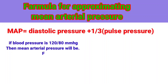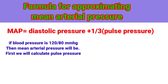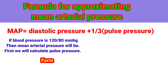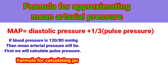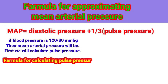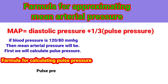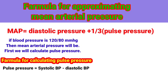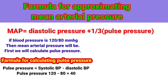then we will first calculate pulse pressure. The formula for pulse pressure is: pulse pressure equals systolic BP minus diastolic BP. So that is 120 minus 80, which equals 40 mmHg.